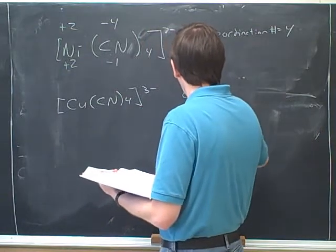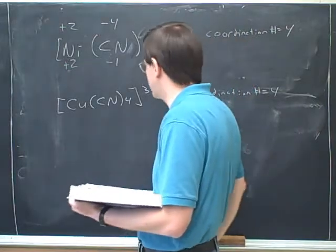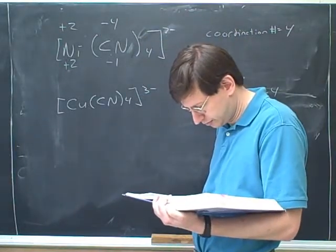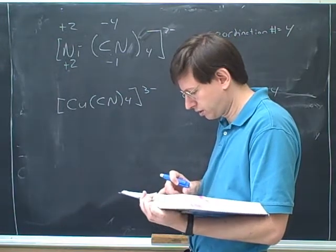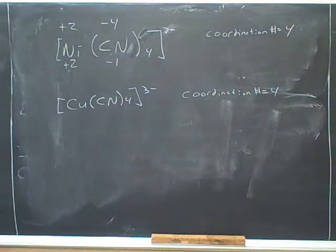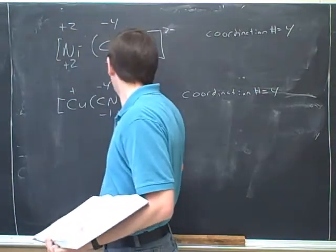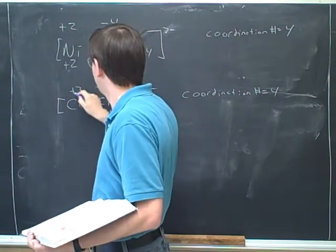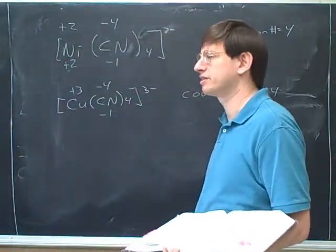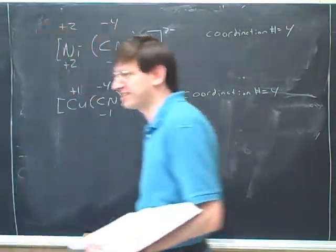So what's the coordination number here? 4. And let's figure out the oxidation number. Plus 1. Sounds good. Again, we already know that cyanides have negative 1 charges, so negative 4 overall. Here we're just given the complex ion. We know it has to be negative 3 overall. So this must be plus 1. So this would be copper 1 plus. Yeah, what you said was right.